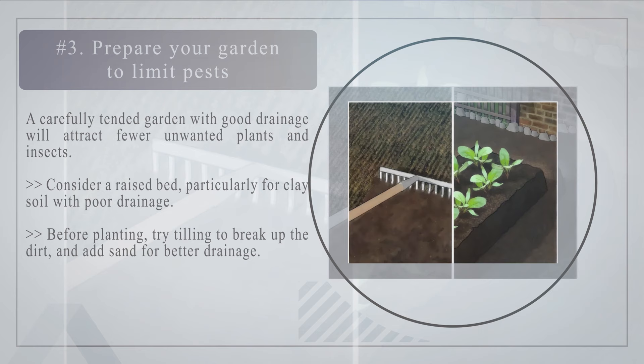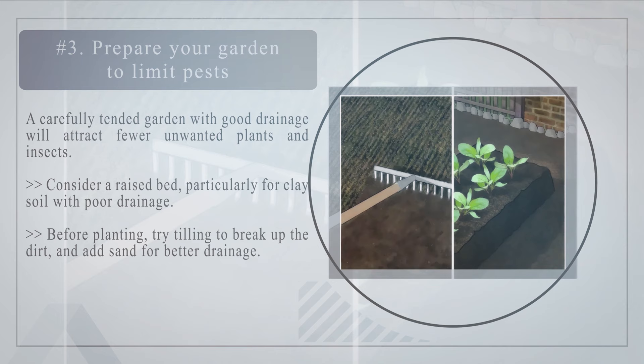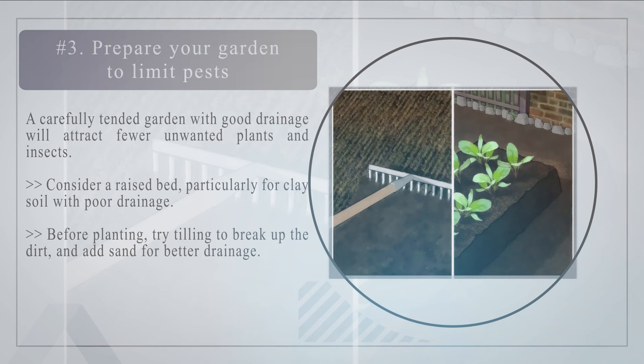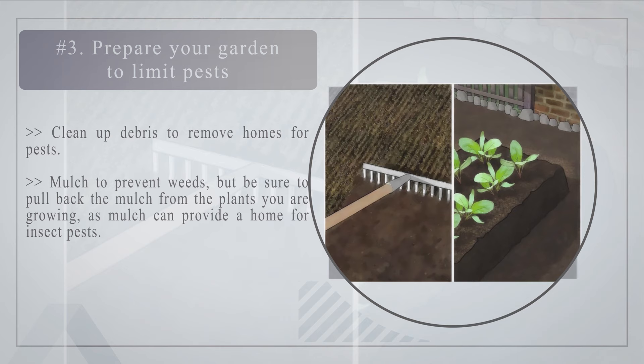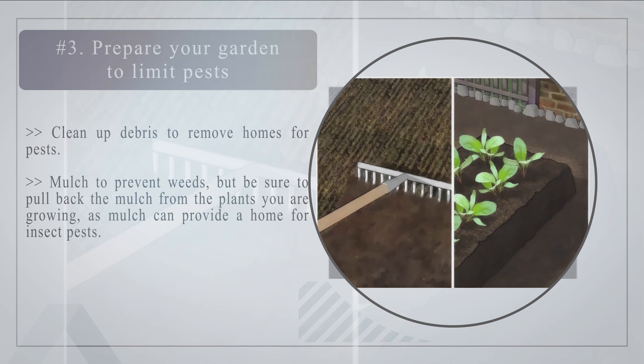Number three: prepare your garden to limit pests. A carefully tended garden with good drainage will attract fewer unwanted plants and insects. Consider a raised bed, particularly for clay soil with poor drainage. Before planting, try tilling to break up the dirt and add sand for better drainage. Clean up debris to remove homes for pests. Mulch to prevent weeds, but be sure to pull back mulch from the plants you are growing, as mulch can provide a home for insect pests.